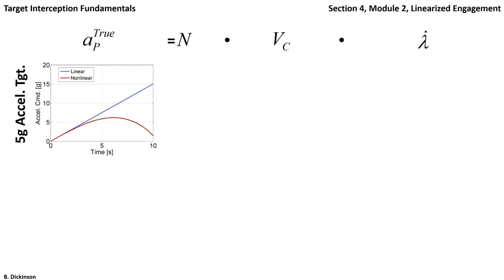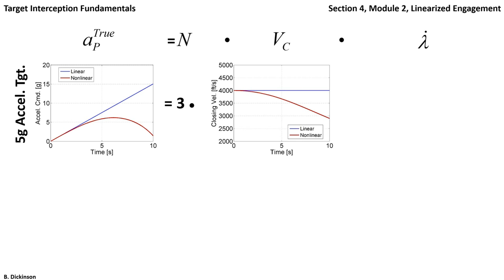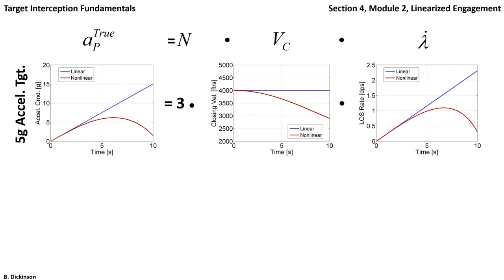Why is there an acceleration discrepancy between linear and nonlinear? Starting with our ProNav law — acceleration command equals navigation gain times closing velocity times line-of-sight rate — for the 5G accelerating target case we examine both closing velocity and line-of-sight rate. There is a discrepancy in closing velocity, but clearly the line-of-sight rate is the dominant variable. Looking at the relative difference between linear and nonlinear, closing velocity shows about a 35% difference, while line-of-sight rate shows multiple factors of difference. So line-of-sight rate is the variable driving the discrepancy in the acceleration command.